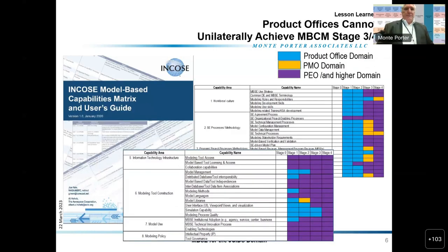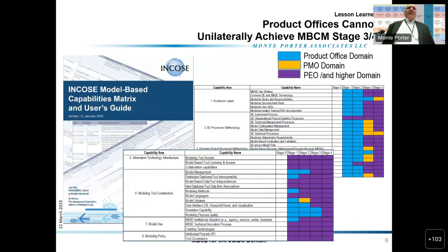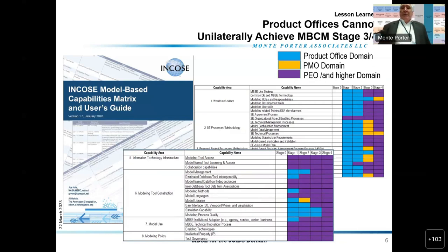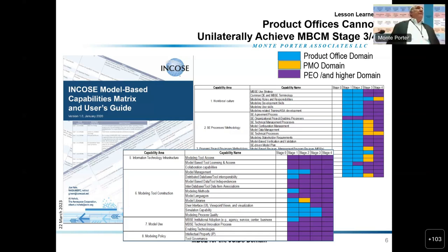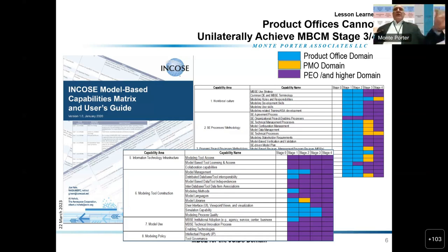One of the lessons we learned was we looked at the INCOSI model-based capabilities matrix and user's guide and did an assessment of every one of those 21 PMs. We found that product offices cannot unilaterally achieve stage three, nor can they achieve stage four. The blue is something they might achieve on their own; yellow requires someone higher; purple requires much higher organizational involvement. A PEO might not be big enough — all of Army might not be big enough. As we try to move diligently with MOSA, we don't control all the moving parts.